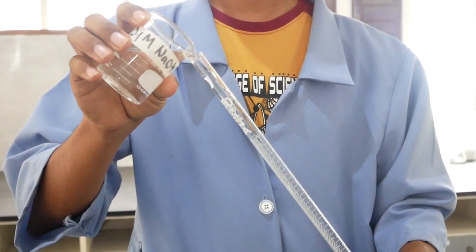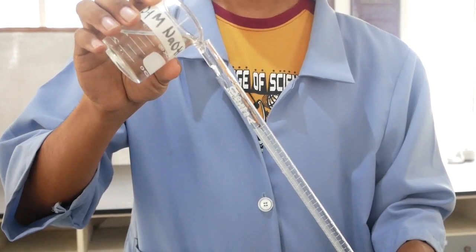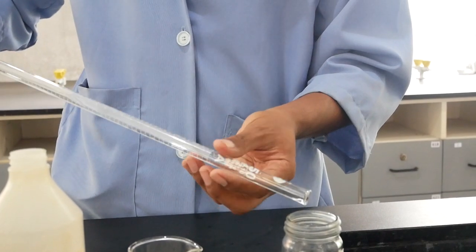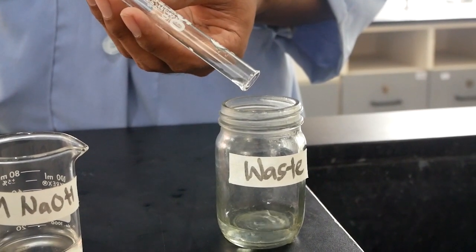For the final rinsing, use a little of your sodium hydroxide titrant to rinse off any remaining water inside the burette. Pour this into a waste jar as shown here.